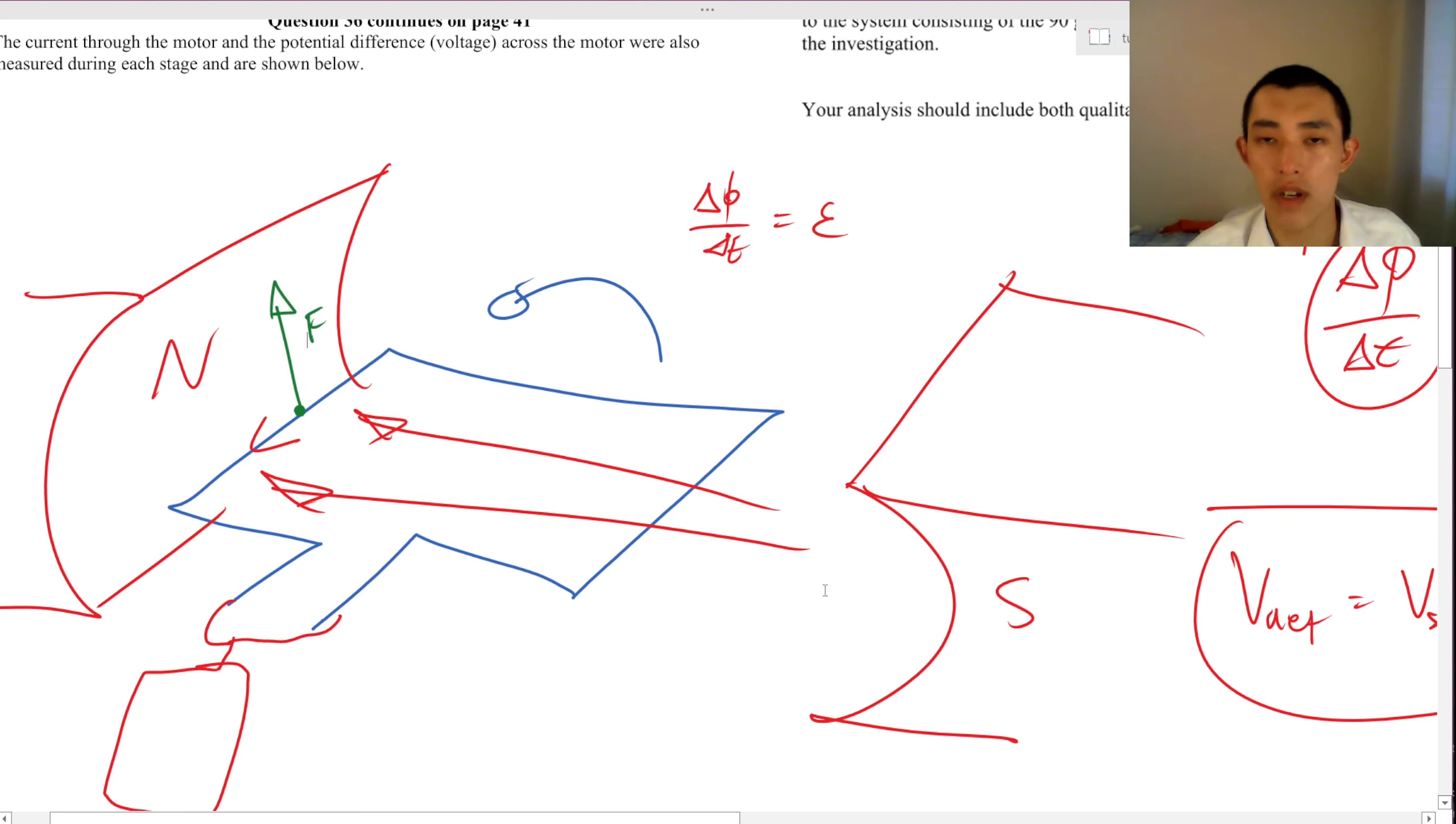This is called back torque. It's like back EMF, but for a generator. That's why turning a generator becomes hard. Because you've induced that back torque.